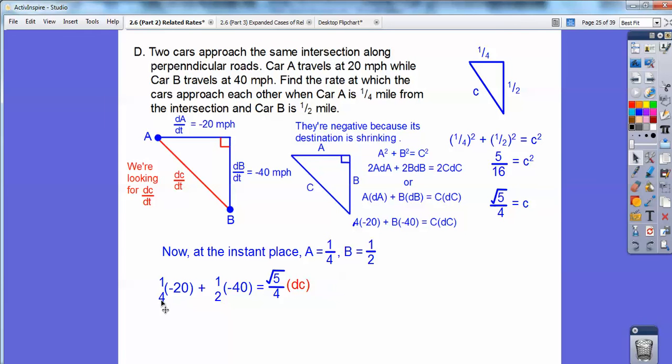1 fourth of negative 20 is negative 5. This is plus negative 20. Gets me a negative 25. All right. And then I multiply by the inverse of this guy right here. And I get the answer is negative 100 over root 5, which is negative 25 root, or 20 root 5 negative miles per hour.